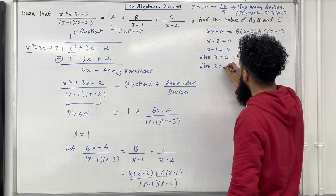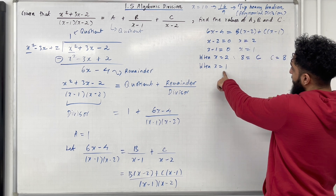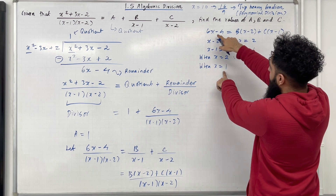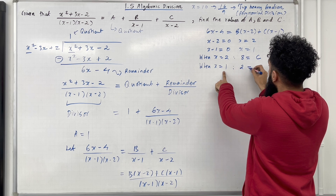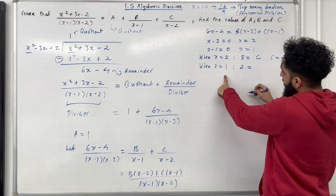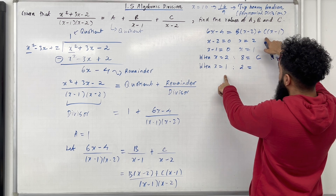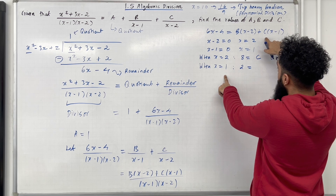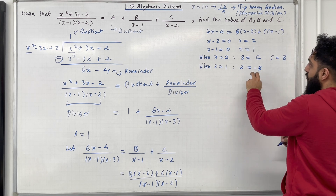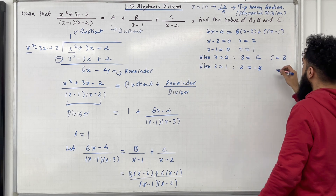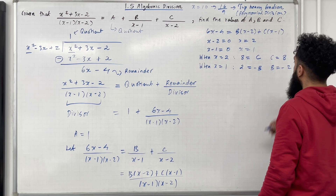When x is equal to 1: substituting into the left hand side gives me 2, and substituting into the right hand side gives me minus b. Hence b is equal to 2 divided by minus 1, so b is equal to minus 2.